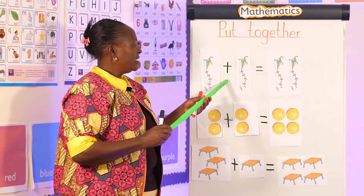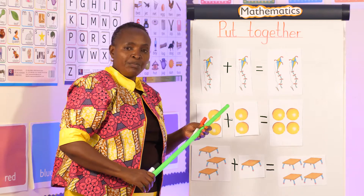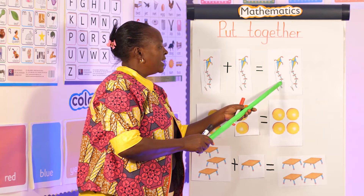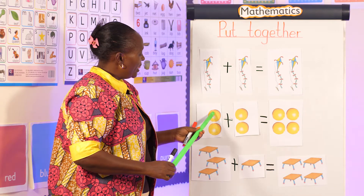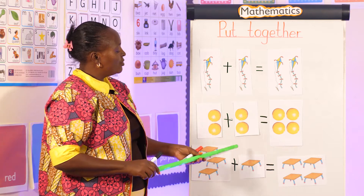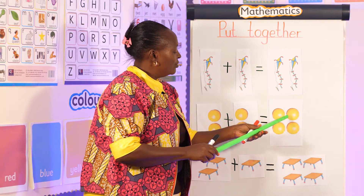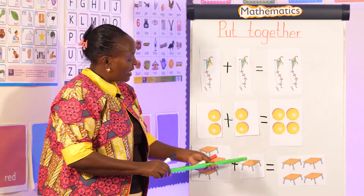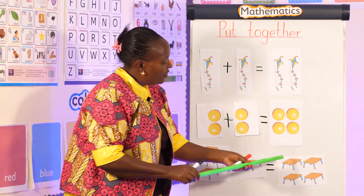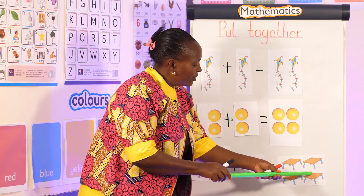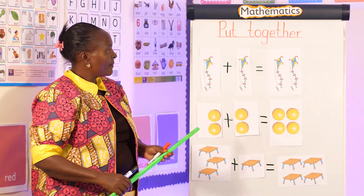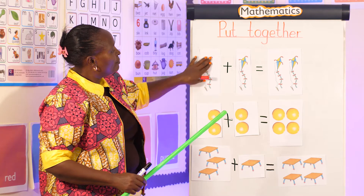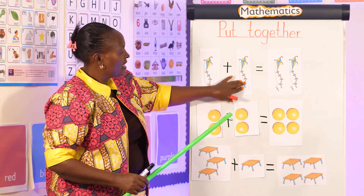So can we repeat after me? One plus one is equal to two. Two plus two is equal to four. Three plus one — what do we have? One, two, three, four. These are examples of putting together activities.